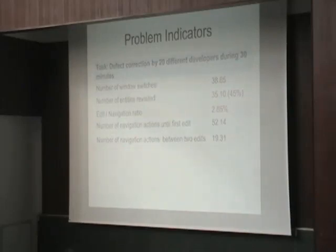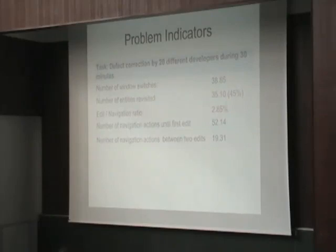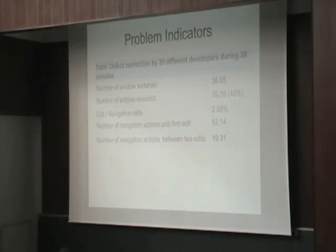I have some problem indicators for this. We really have a problem when we navigate software systems. What I did: I recorded a development session of 30 developers that tried to fix a defect in a linear software system. It was a medium-sized application, and we recorded all the navigation activities during 30 minutes. On average, developers switched windows around 40 times — just in 30 minutes.